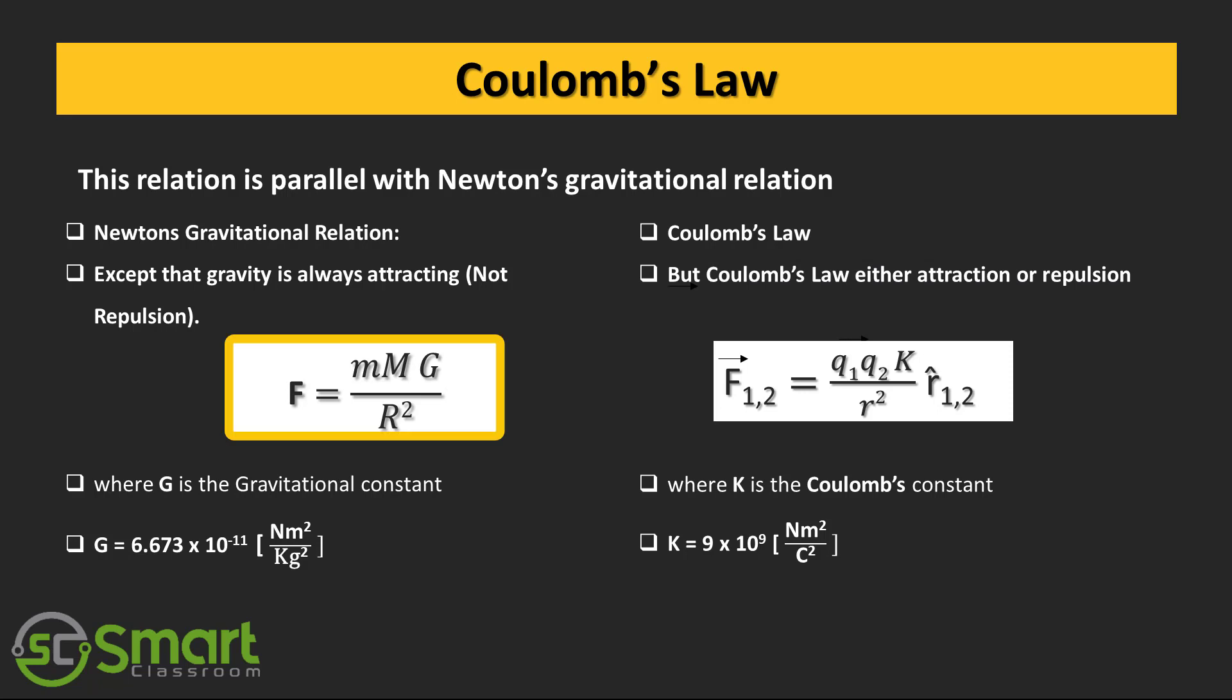The force F in gravitational field is small m capital M G divided by r square, but the same force in electric field is equal to q1 q2 k divided by r square into unit vector r12, where capital G is the gravitational constant and k is the coulomb constant. The capital G, the gravitational constant, equals 6.673 into 10 to the power minus 11 newton meter square per kilogram square, where the coulomb constant k equals 9 into 10 to the power 9 newton meter square per coulomb square.